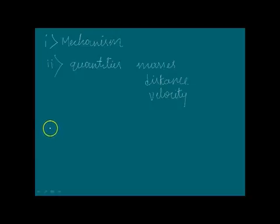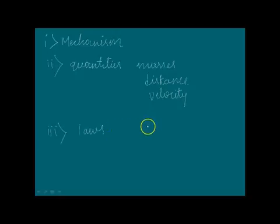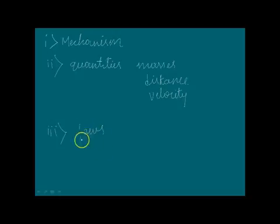The third important thing is to derive laws or principles from such studies. When we study any natural event, we will end up with some result. When we study the theory and understand the concept, at the end of our research we will get some result, and we express that result in the form of laws. One example is the gravitational law — when Newton found that every object on the earth attracts every other object in the universe, he conducted many experiments and finally framed the universal law of gravitation. Whenever we study a natural event, we will definitely come up with a result expressed in terms of laws.